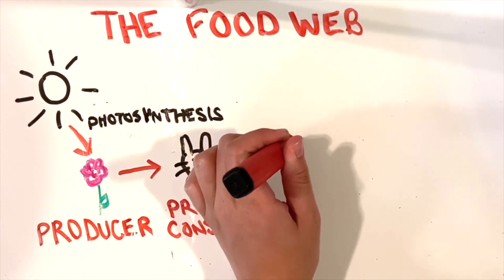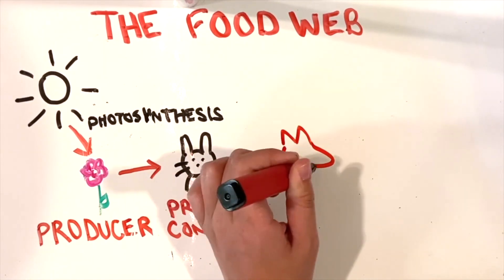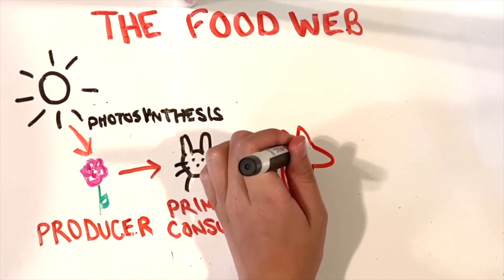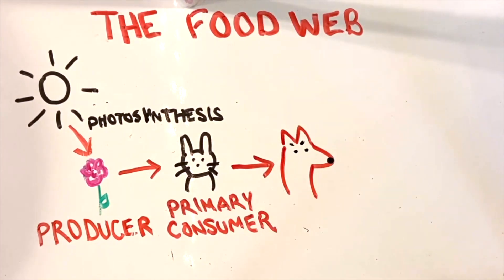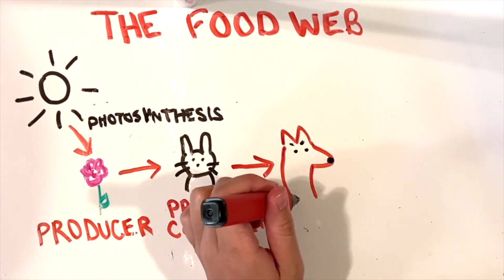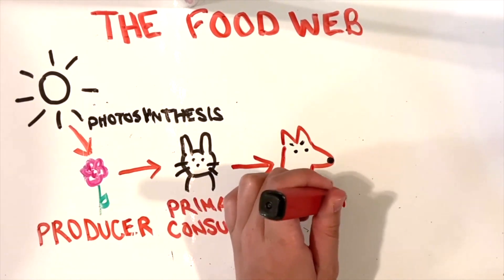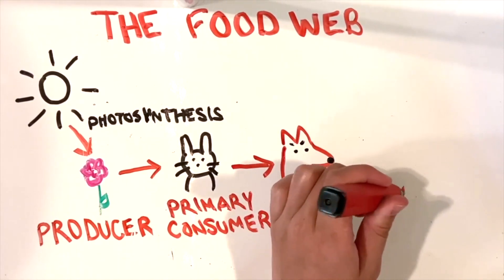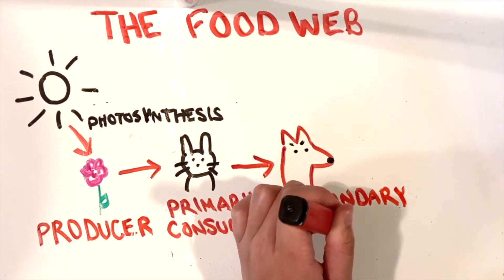If a fox comes along and eats the bunny, this would make the fox a secondary consumer. The next step in the food web is a carnivore or secondary consumer who gets their energy by consuming primary consumers, just like this fox.